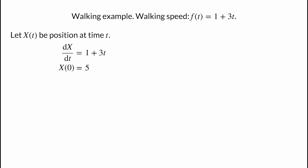Let's make the example concrete by specifying your walking speed. Let's say your walking speed at time t, or f of t, is 1 plus 3t. If we let time be measured in hours and distance in kilometers, this means you started walking at 1 kilometer per hour and accelerated by 3 kilometers per hour every hour. We start by taking the indefinite integral, or antiderivative, of f to calculate your position at time t. Let x of t be your position at time t; then x satisfies the pure time differential equation dx/dt equals 1 plus 3t. To calculate your position, we also need to specify where you start.